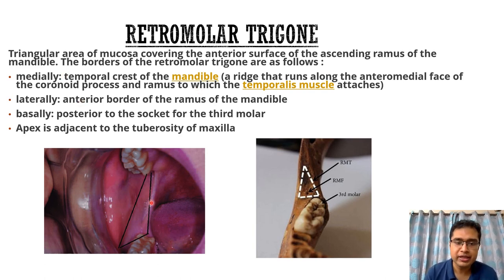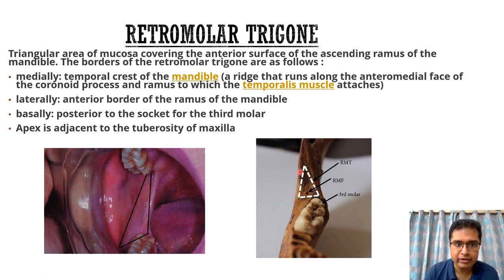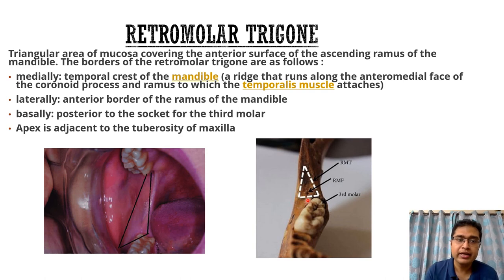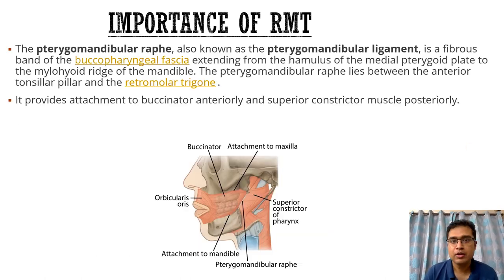The boundaries of the retromolar trigone must be remembered. Medially it is bounded by the temporal crest of the mandible; laterally by the anterior border of the ramus of the mandible. The base is formed by the socket of the third molar, and the apex is adjacent to the tuberosity of the maxilla. All these boundaries are very important — it is a triangular area of mucosa covering the anterior surface of the ascending ramus.